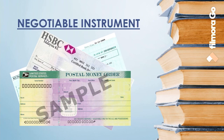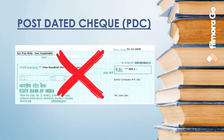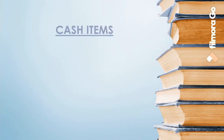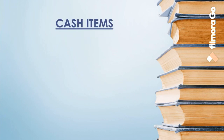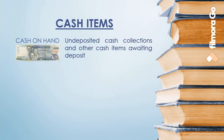Post-dated checks (PDC) cannot be considered as cash because they are not acceptable by bank for deposit or outright encashment. The following cash items are included in cash. Cash on hand includes undeposited collections and other cash items awaiting deposit, such as customer checks, cashier's or manager's checks, traveler's checks, bank drafts, and money orders.